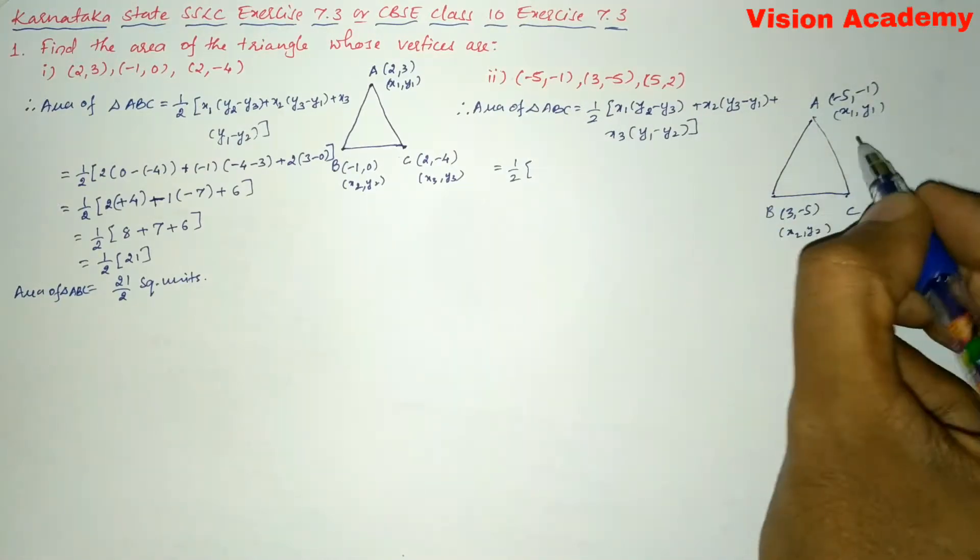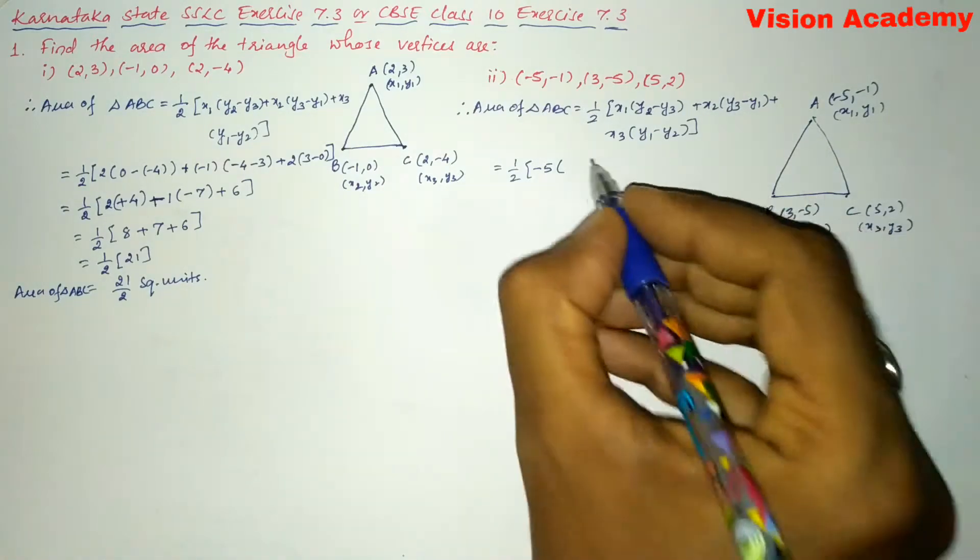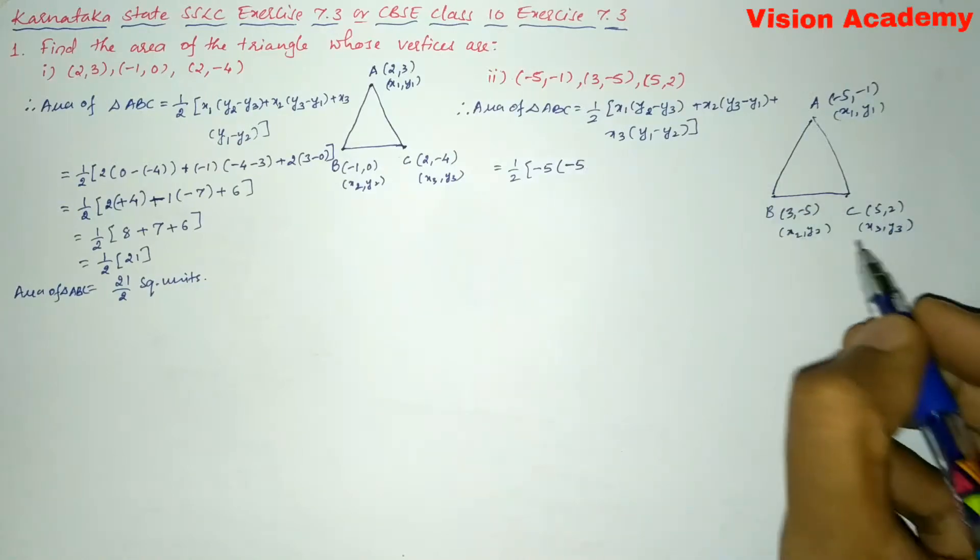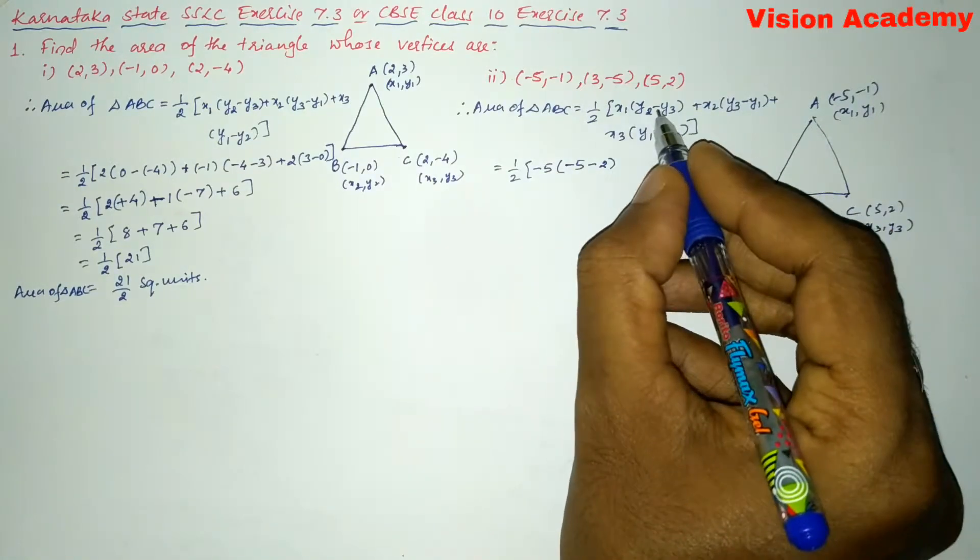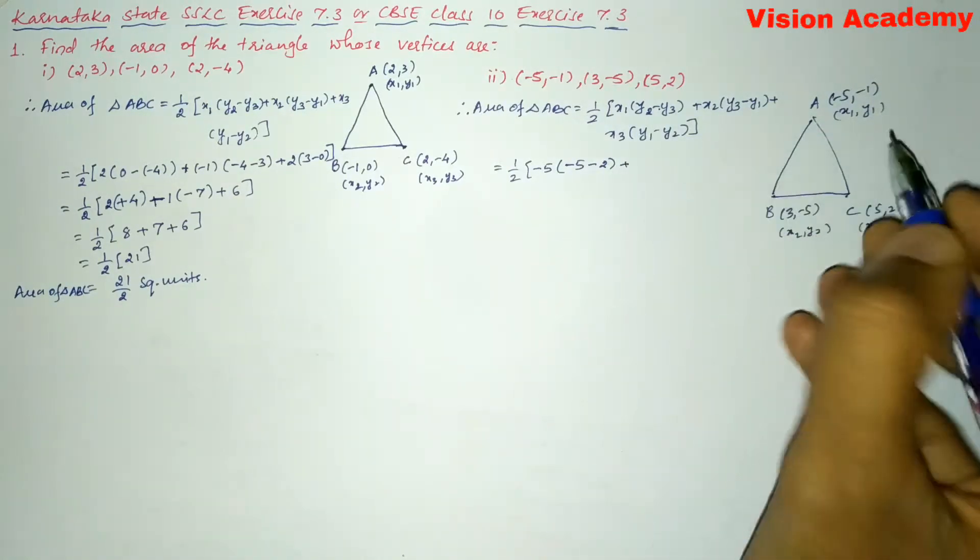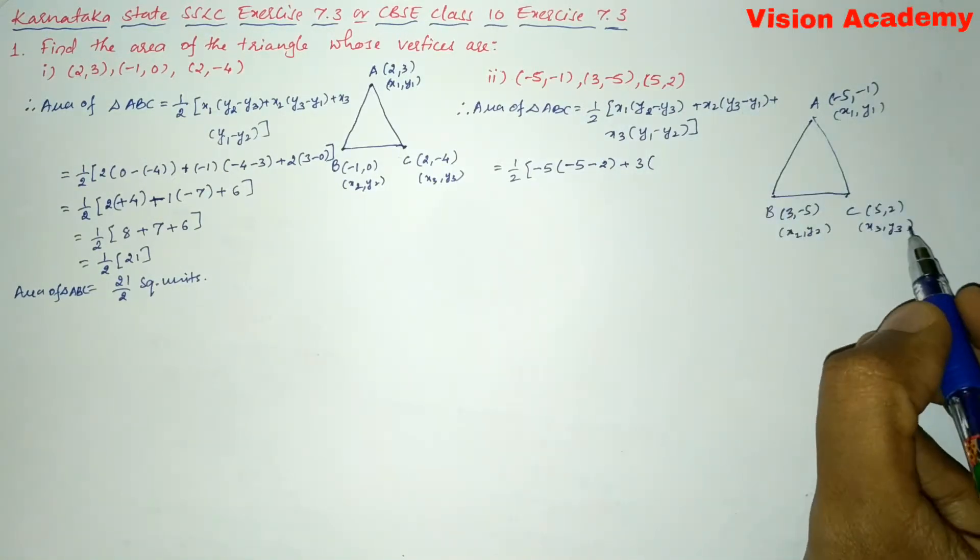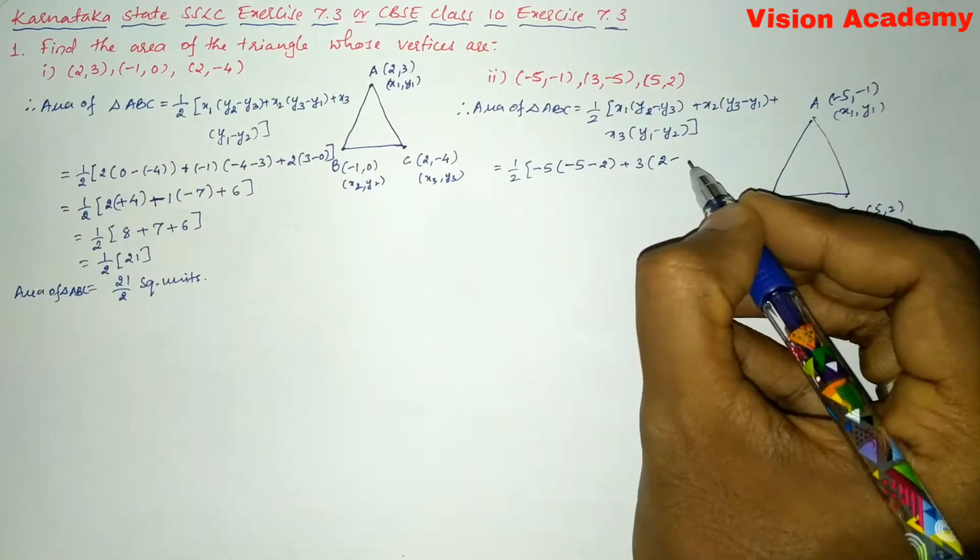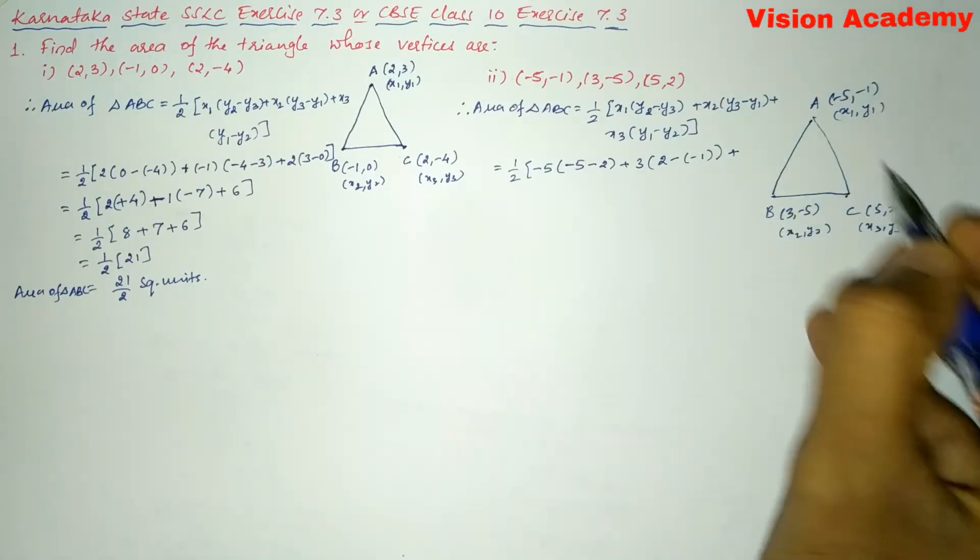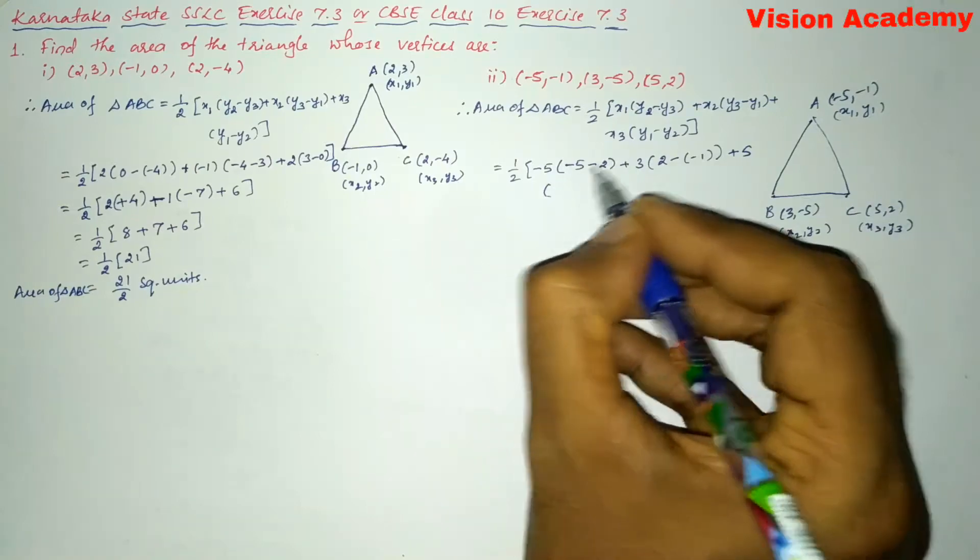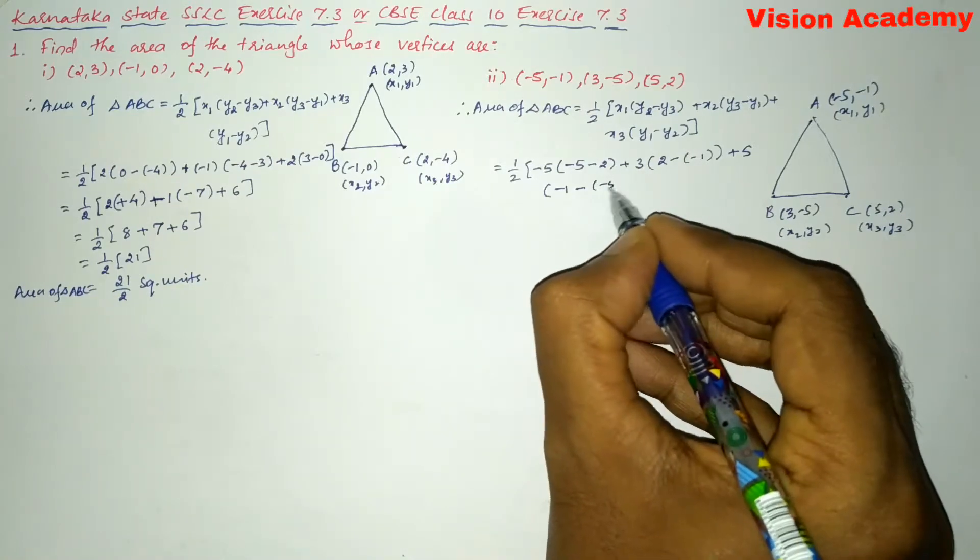Now let us write x1 is -5 into y2 minus y3. So here y2 is -5 and y3 is 2. Next plus x2 is 3 into y3 is 2 minus y1 is -1 plus x3 is 5 into y1 is -1 minus y2 is -5.